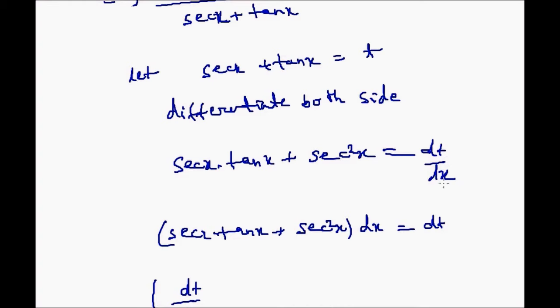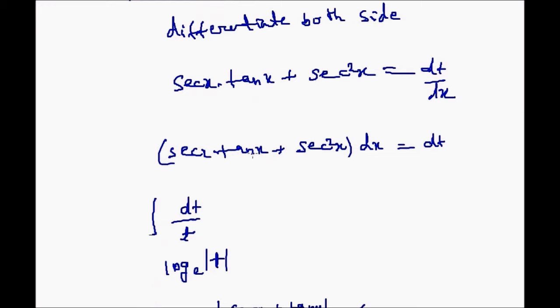And for t it is dt by dx. So now multiply this dx in the left hand side. We will get sec x into tan x plus sec x square x into dx is equal to dt.